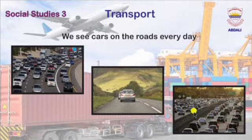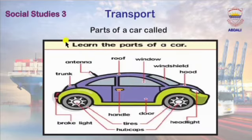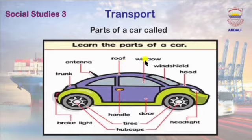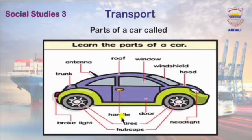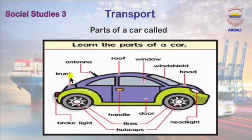Now let's look at the parts of a car: antenna, roof, window, windshield, hood, headlight, door, handle, tires, hubcaps, rock light, and trunk.